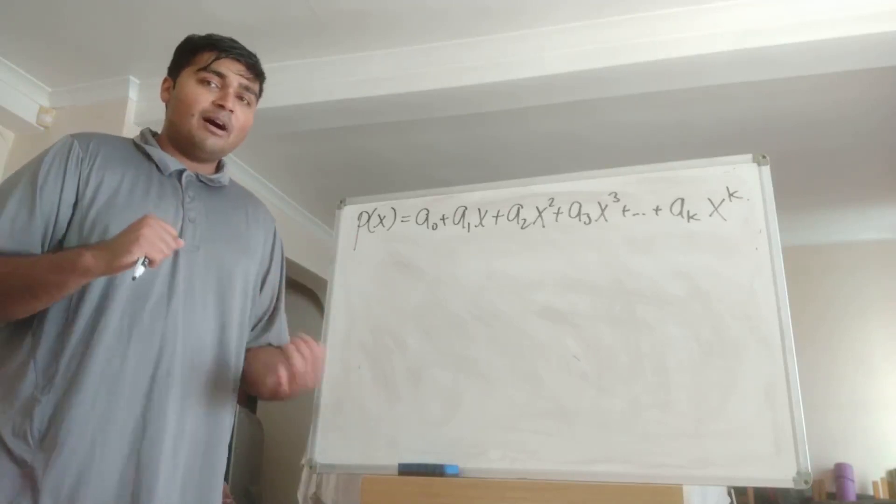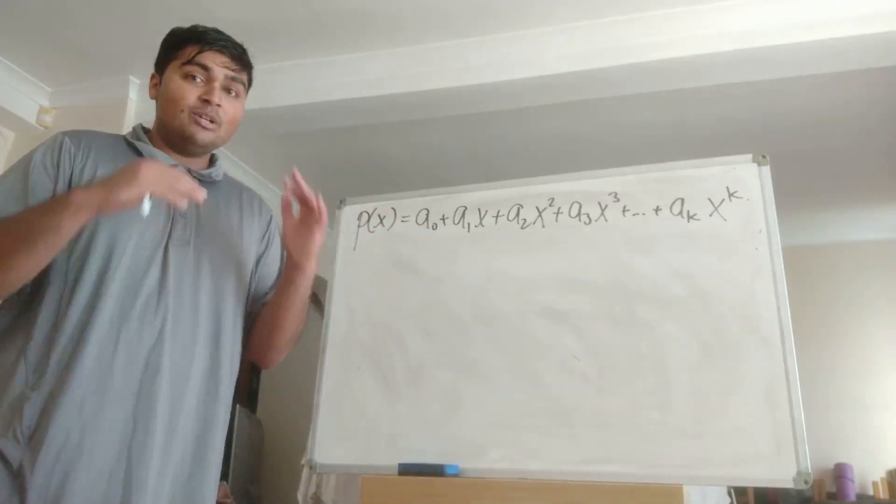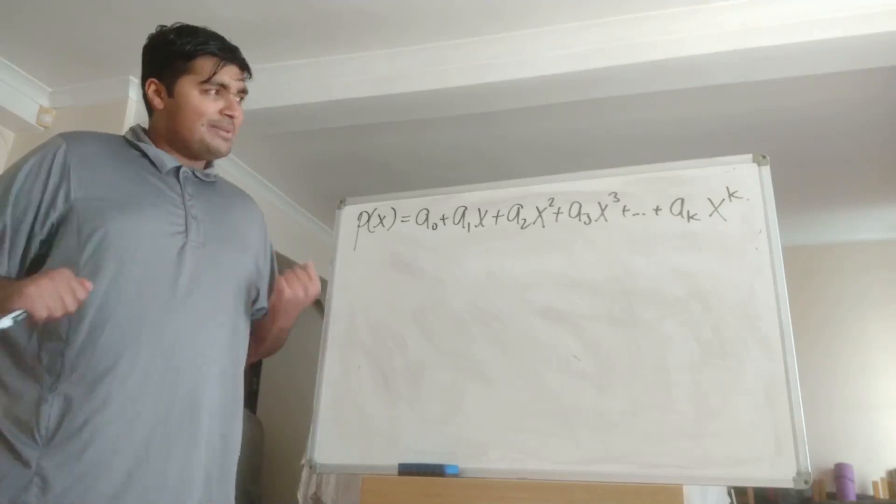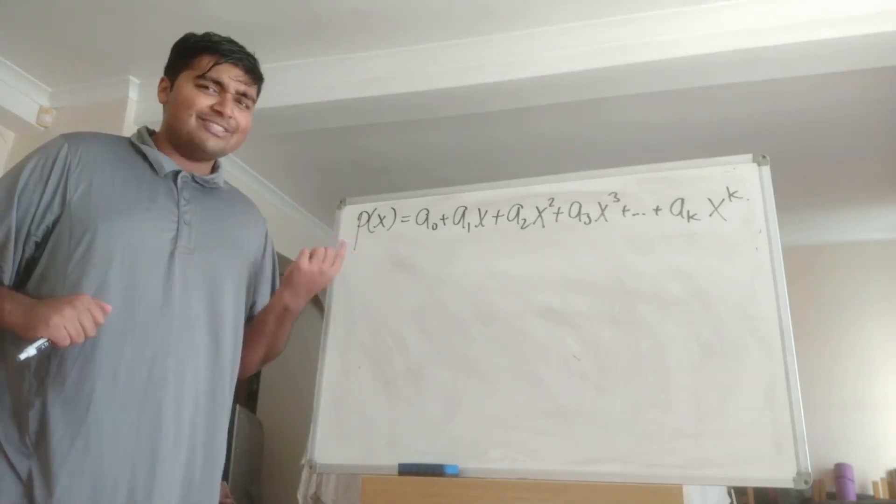So once we have P(pi) I claim that we can reduce P down to a finite number of options. Well how is this possible? Well it probably helps if I give an example for this.